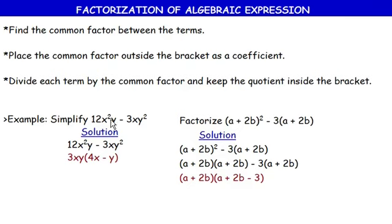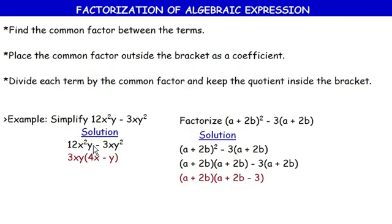The first thing is to find the common factor between the terms — between 12x²y and 3xy². In determining the common factor, we consider the numbers aspect and the variables aspect. The common factor of 12 and 3 is 3, because 3 can divide both 3 and 12.